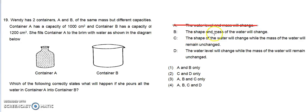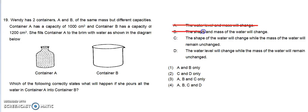Option B: the shape and mass of water will change. The shape of the water will change as the water takes the shape of the container, but the mass of water will not change because the volume of water remains the same. So B cannot be a correct option.